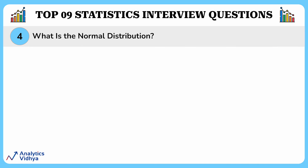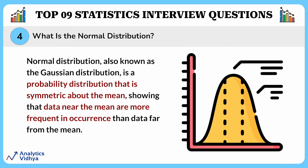The next common interview question asks: what is normal distribution? Normal distribution, also known as Gaussian distribution, is a probability distribution that is symmetric across the mean, showing that data near the mean are more frequent in occurrence than data far from the mean. In simple words, most of the data clusters around the average with fewer points as you move away in either direction — picture a symmetrical bell-shaped curve. For example, when measuring people's heights or test scores, many individuals are close to the average and fewer are exceptionally tall or short.